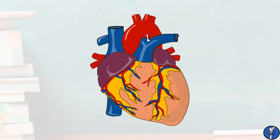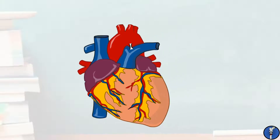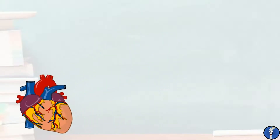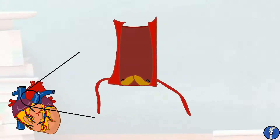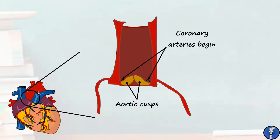Let's first take a look at the arteries. All of the arteries in the heart originate from the aorta, which contains oxygenated blood. At the root of the aorta, there's a three-cusped valve, which ensures blood can only flow in one direction. It's from just distal to this valve, in the aortic sinuses, that the coronary arteries originate.